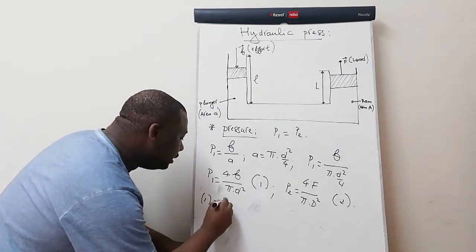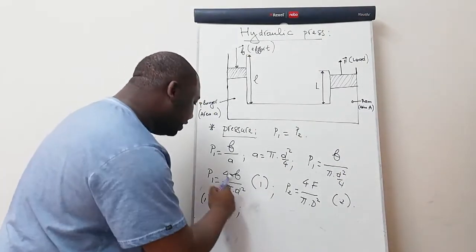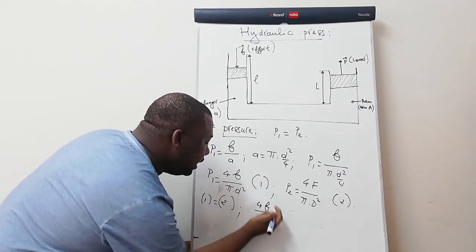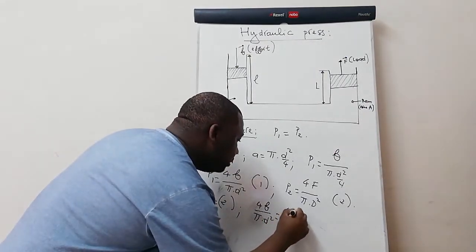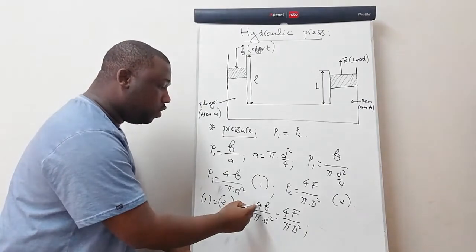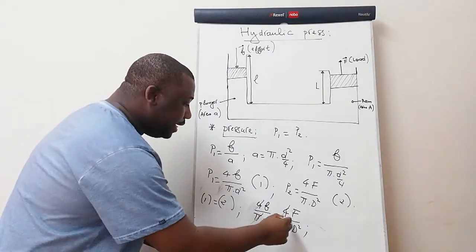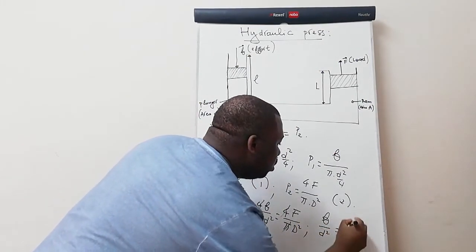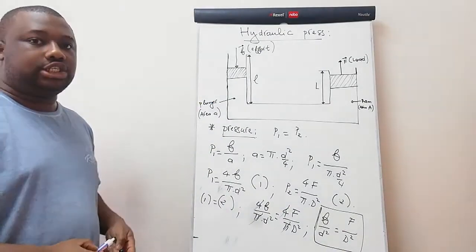Since P1 equals P2, setting equation one equal to equation two gives: 4f over (π d²) = 4F over (π D²). The fours cancel and the π's cancel, leaving the very important relationship: f over d² = F over D².